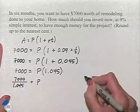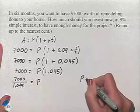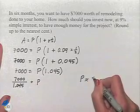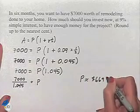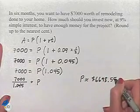Using a calculator and rounding up, we come up with our value of P as approximately $6,698.55.